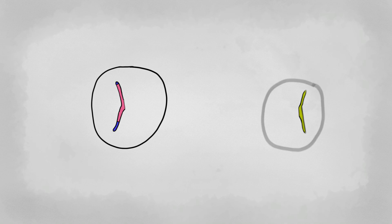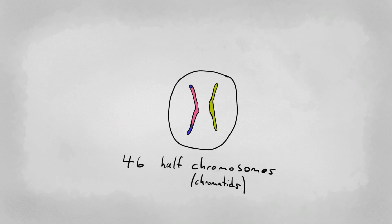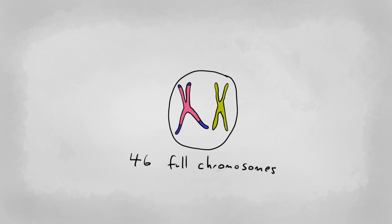When they meet the sex cell of another person, the new cell they form will have 46 chromosomes, 23 from each parent. Then they'll replicate like in mitosis to form 46 full chromosomes, and eventually a new person.